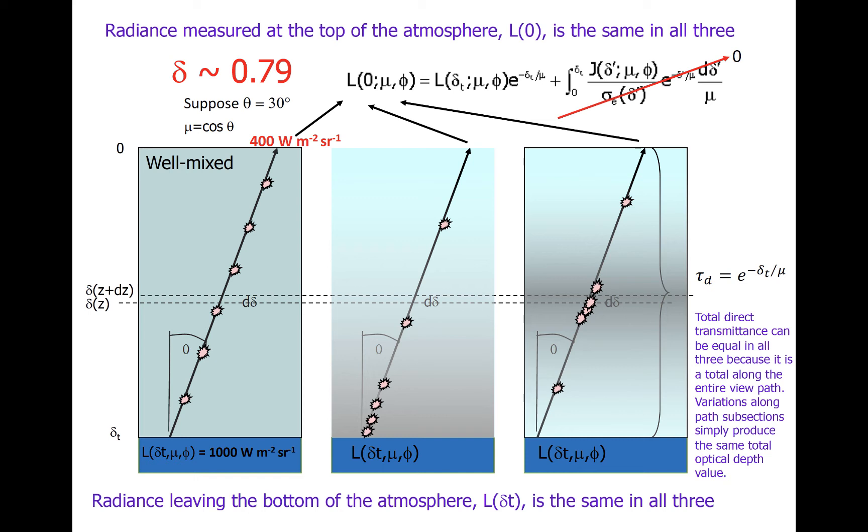You should get something close to 0.79. Divide 400 by 1000 to get 0.4. Take the negative natural log of 0.4, and multiply by the cosine of 30 degrees.